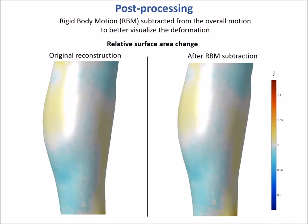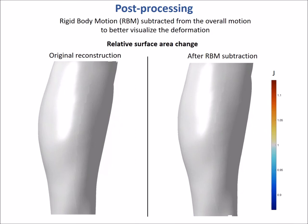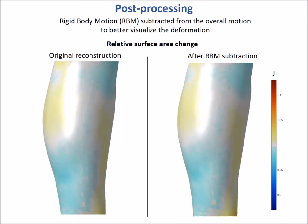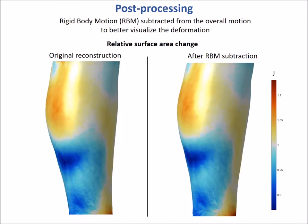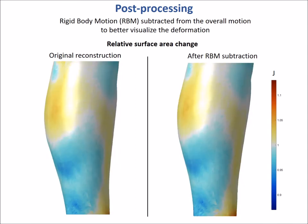In this figure, the color mapping illustrates the local relative area change of the surface, also known as the dilatation J.